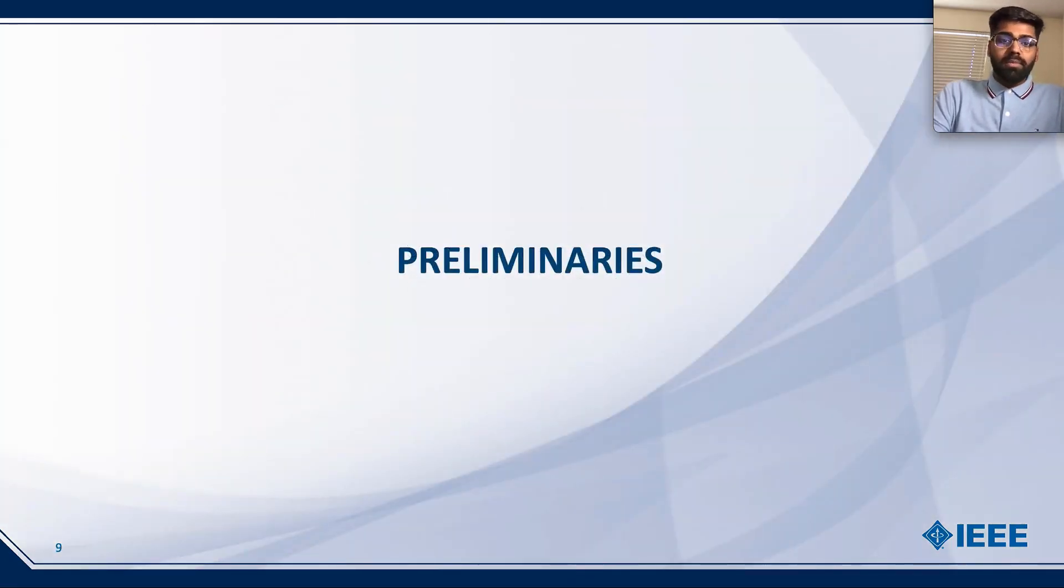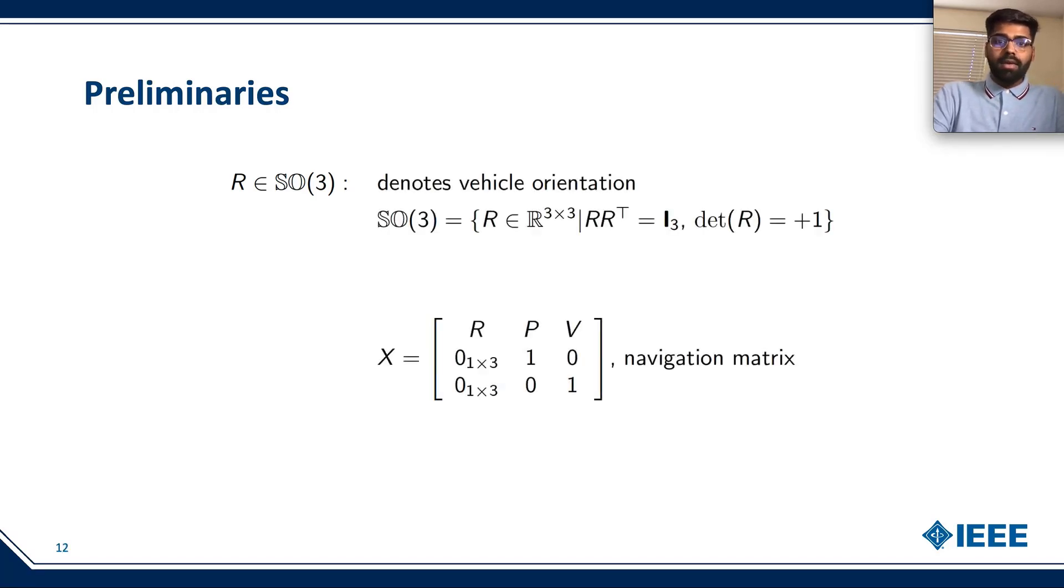Now let's go over the preliminaries. In this presentation, R stands for the orientation of the vehicle and it belongs to SO3, which is the special orthogonal group of order 3. X is the navigation matrix, which includes three components: R, P, and V. R stands for the orientation of the vehicle, P is the position of the vehicle, and V is the linear velocity of the vehicle.